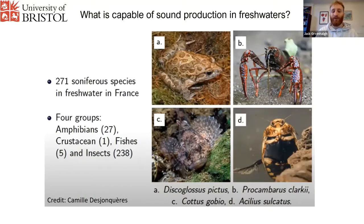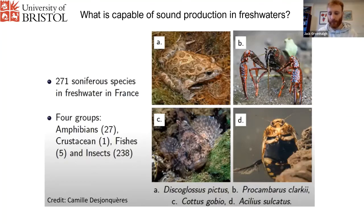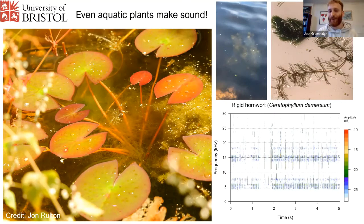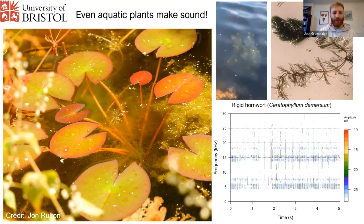There are 27 amphibians, crustaceans, a few fish, but by far the most speciose group is the insects — the insects are producing most of the sound in freshwater soundscapes, it seems. But even aquatic plants make sounds, which I found absolutely amazing. When I recorded aquatic plant sounds for the first time, I thought there was something wrong with my recorder. I was fiddling with the headphone jack, thinking maybe it's interference from a mobile phone on the recorder, or it's just a totally bizarre sound.